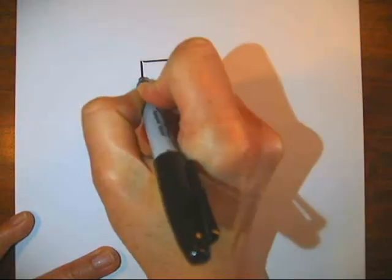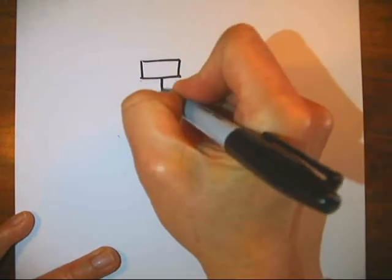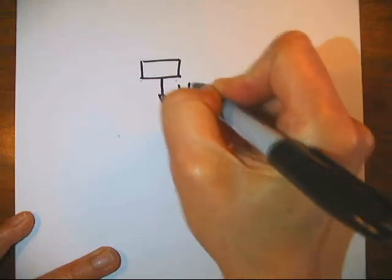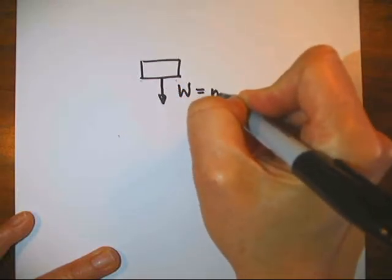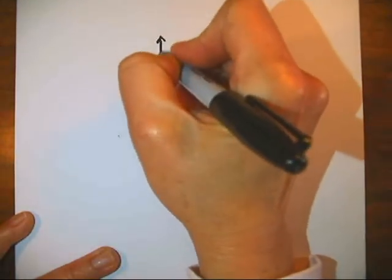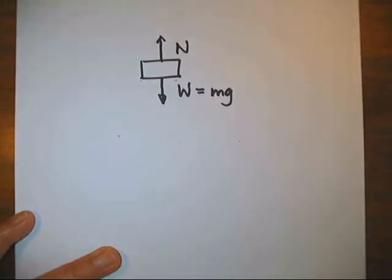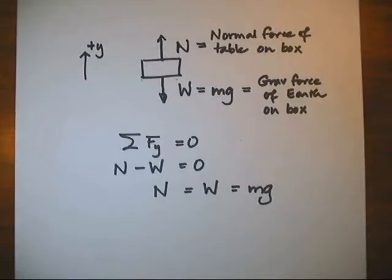The block accelerates when it's pushed across the table, but what about the vertical forces acting on it? Obviously, the block has weight, but since it doesn't accelerate vertically, the downward force of the earth pulling on the block must be equal to the normal force of the table supporting the block. So the normal force is equal to the weight mg.